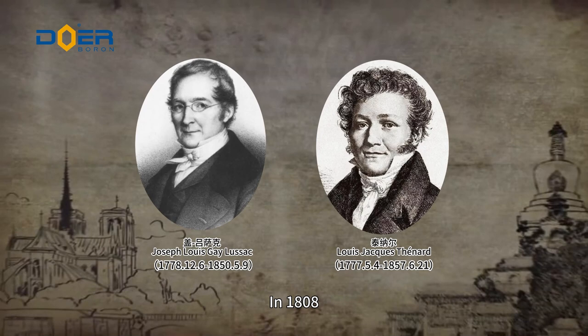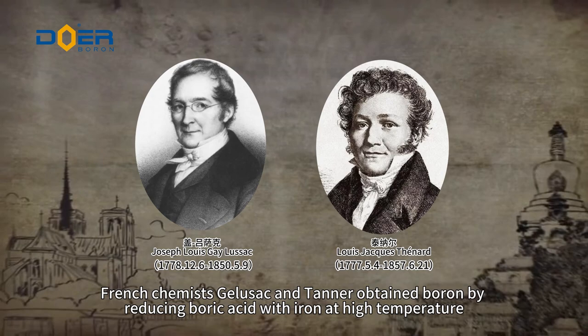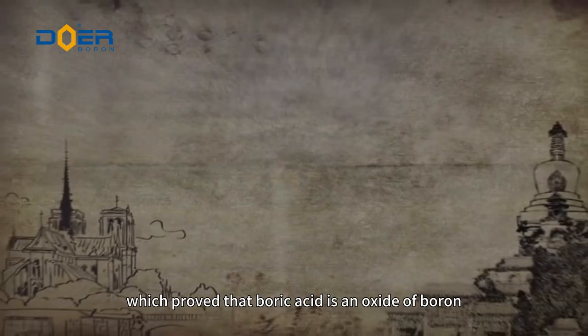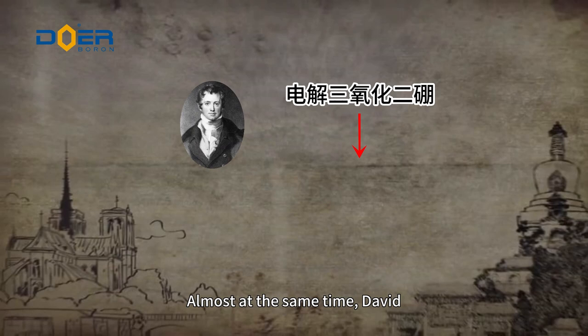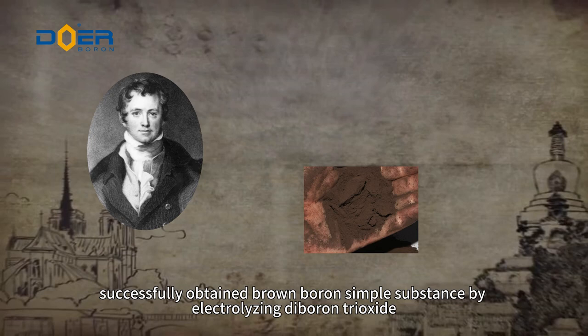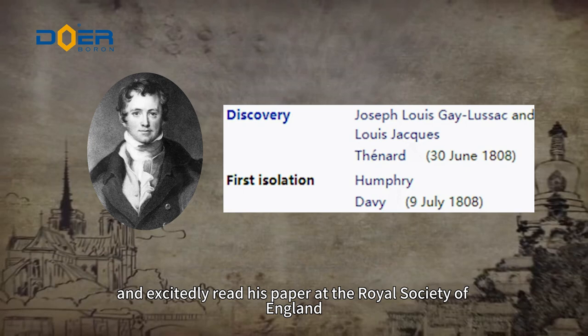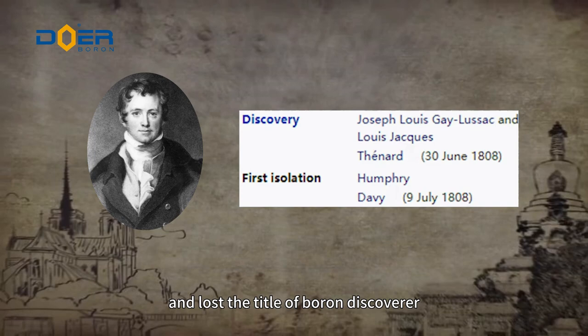In 1808, French chemists Galeusek and Tanner obtained boron by reducing boric acid with iron at high temperature, proving that boric acid is an oxide of boron. Almost at the same time, British chemist Davy successfully obtained a brown boron simple substance by electrolyzing boron trioxide and excitedly presented his paper at the Royal Society of England. Unfortunately, he was only nine days slower than his French counterparts and lost the title of boron discoverer, but he took the lead in naming the new element boron and won the naming rights.